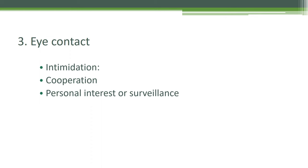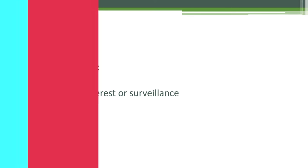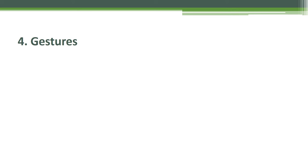Types of eye contact to observe: intimidation — making big staring eyes at people; cooperation — through eye contact people can agree with others' activities; personal interest or surveillance — if the person is talking with you but monitoring the surrounding area, they may have personal interest in surveilling the site. Through eye contact we should know people's intention and whether they are posing a security risk to the organization.